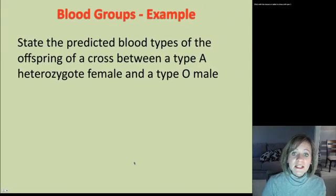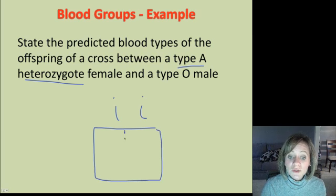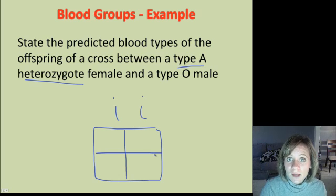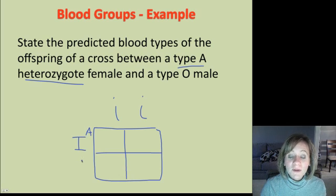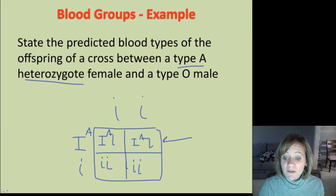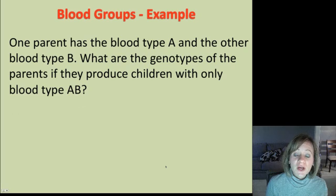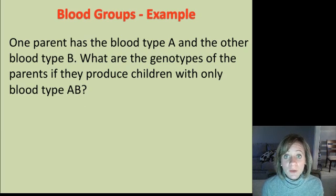Let's predict the blood types of offspring from a cross between a type A heterozygous female and a type O male. The type O male is little i, little i — we know that because we memorized the chart. The heterozygous type A female is I^A i. Filling in the Punnett square, half the offspring will have type A blood and half will have type O blood. Go ahead and do the next example on your own in your notes and show me the Punnett square.